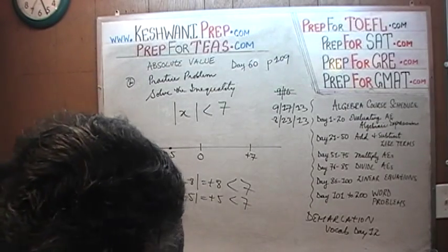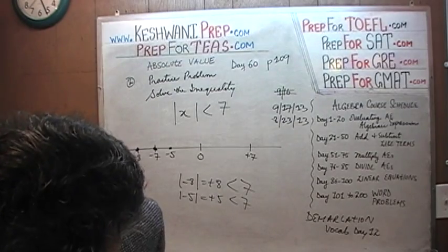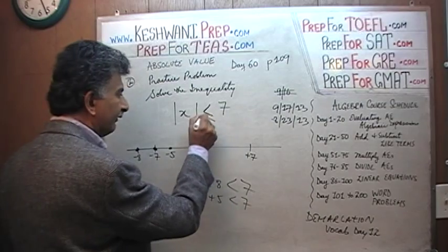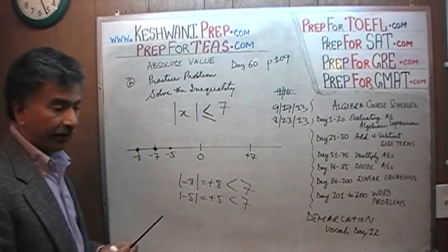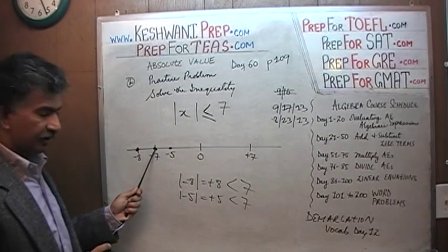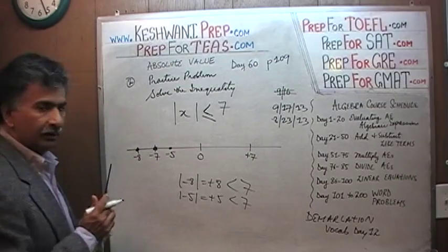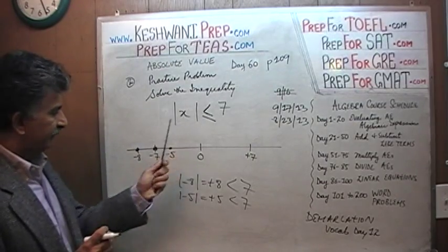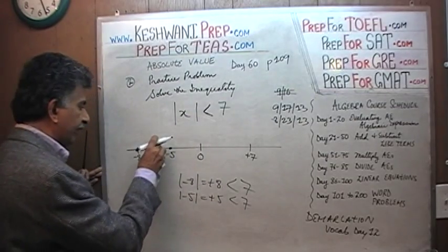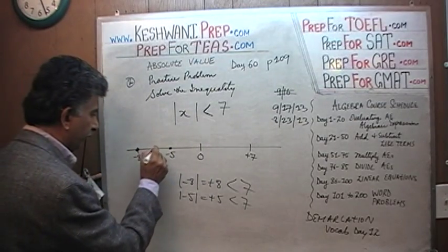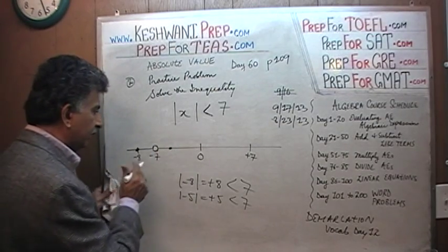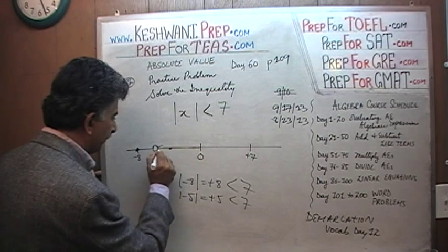Listen carefully — it does not say less than or equal to; it doesn't have the equal sign. If it did have the equal sign, the circle on the number line would be a closed circle. But because it does not have the equal sign, we cannot include that endpoint in our solution — it has to be an open circle. On the number line, x can assume any value in this range, up to but not including the endpoints.